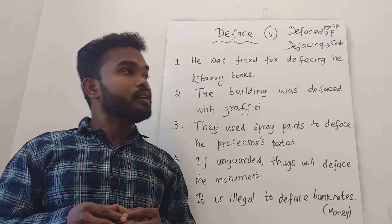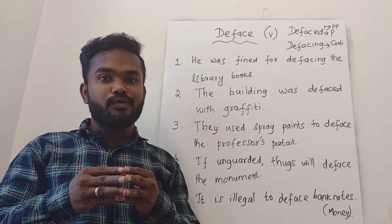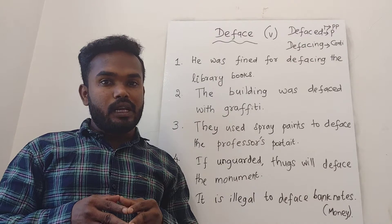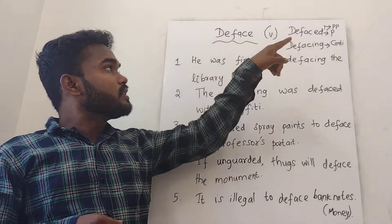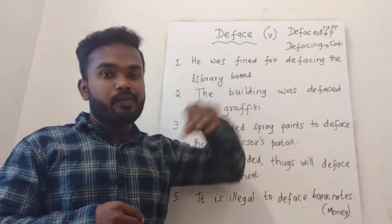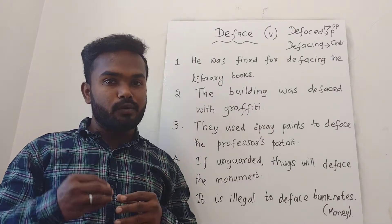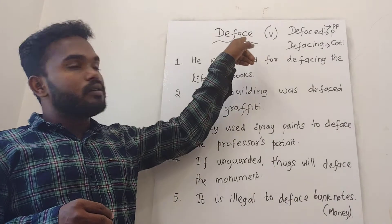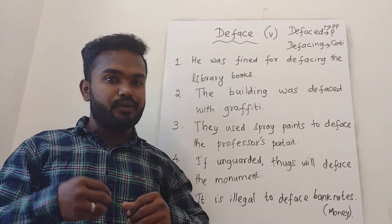This word is basically a verb which means it can have five forms: base form, past form, and the future form. The base form of this verb is deface and the past form is defaced. The past participle form is also defaced. The continuous form of this verb is defacing, and the future form will be modal auxiliary verbs followed by the base form of this verb — that is will deface or shall deface.